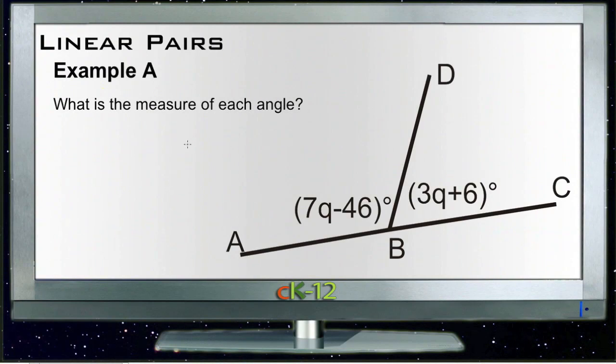All right, let's take a look at the examples for the linear pairs lesson. Our first example, Example A, asks us what the measure of each of the angles here is. Our two angles don't have any degrees with them, they are just expressions. We have 7q minus 46 and 3q plus 6.